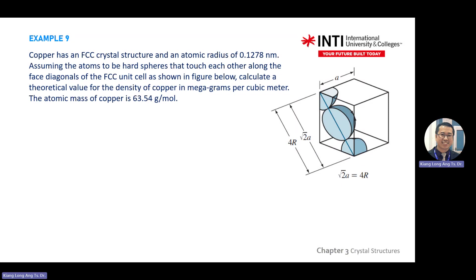For example, if the question gives you FCC, you should be able to draw this diagram. If the question mentions FCC, the question won't give you this diagram. In tutorial questions it's very helpful to give you as much information as possible. But when it comes to a test, sometimes you only see one paragraph. So when you see a paragraph like that, you need to draw something first, then only analyze.